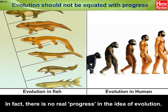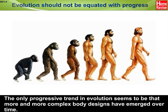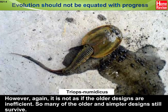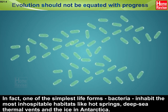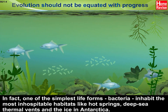In fact, there is no real progress in the idea of evolution. Evolution is simply the generation of diversity and the shaping of that diversity by environmental selection. The only progressive trend seems to be that more and more complex body designs have emerged over time. However, it is not as if the older designs are inefficient — many older and simpler designs still survive. One of the simplest life forms, bacteria, inhabit the most inhospitable habitats like hot springs, deep sea thermal vents, and the ice in Antarctica.